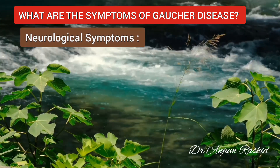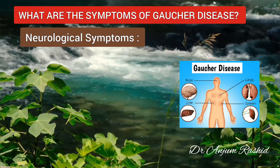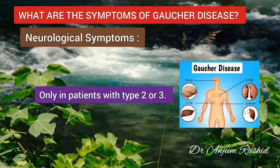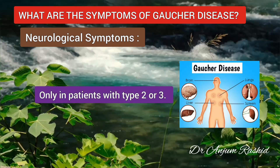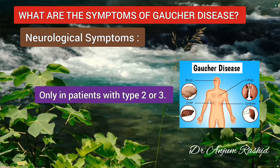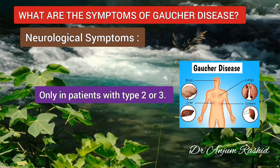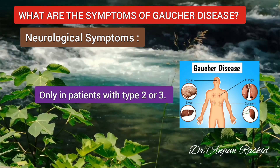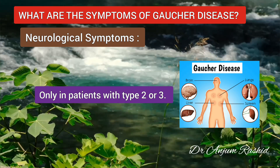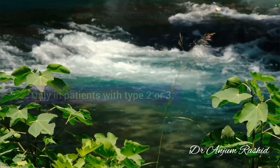The neurological signs and symptoms of Gaucher disease — specifically brain stem symptoms — are present only in patients with type 2 and type 3. These signs and symptoms can be severe and may cause early death.